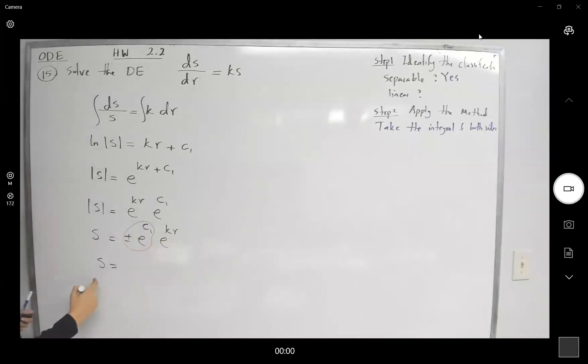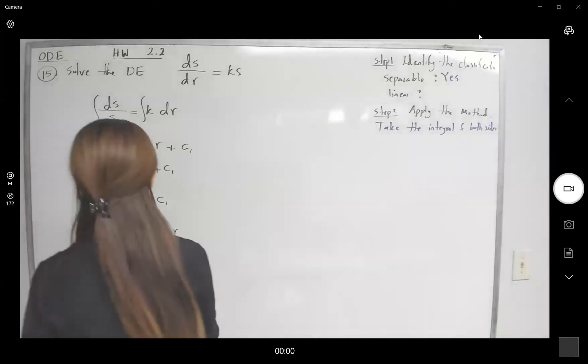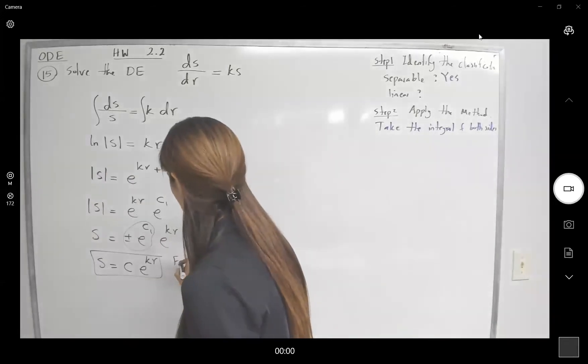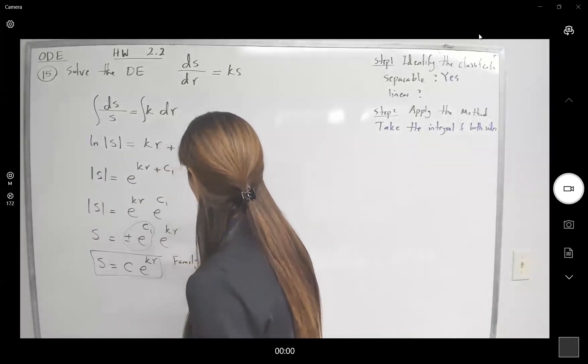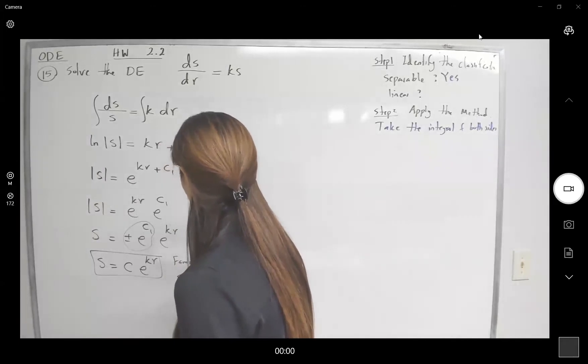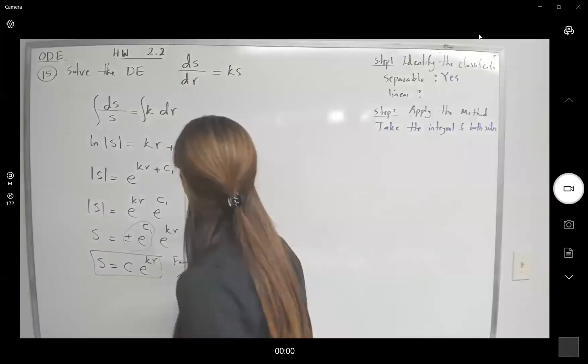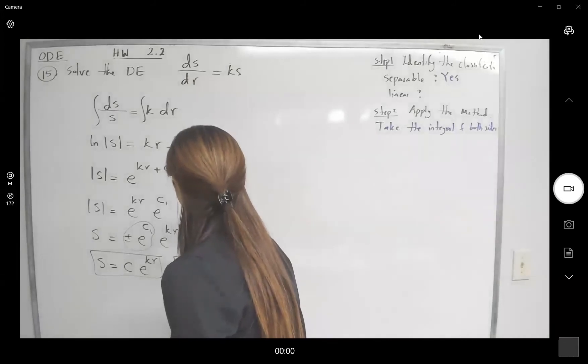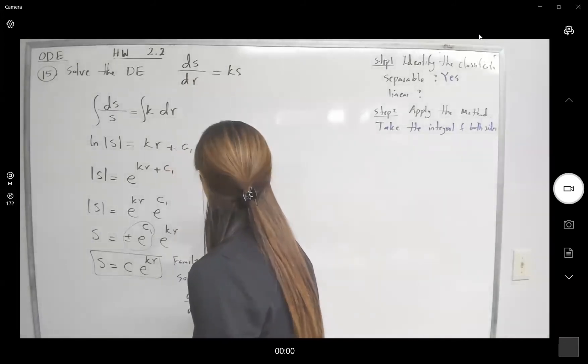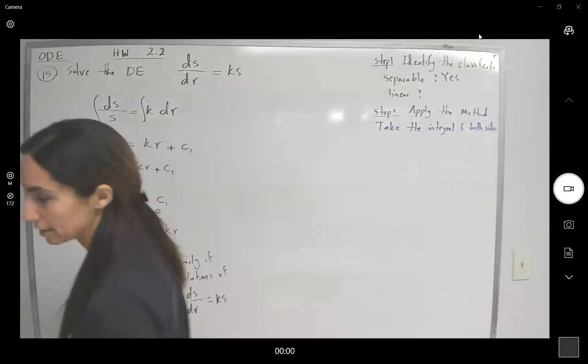S explicitly written as c e to k r. So we have the family of solutions of the differential equation ds over dr equals to k times s.